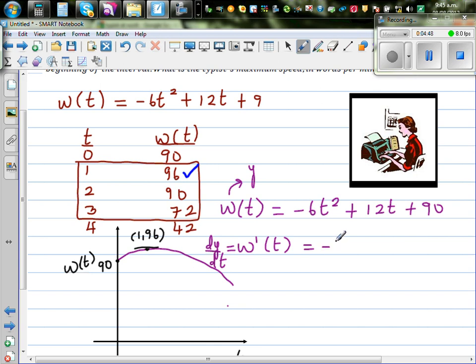So you drop the power down. So that is -6 times 2, t to the power of one, plus the power of t is one. So this is 12 times 1, t to the power zero. So your gradient function W'(t) is -12t + 12.